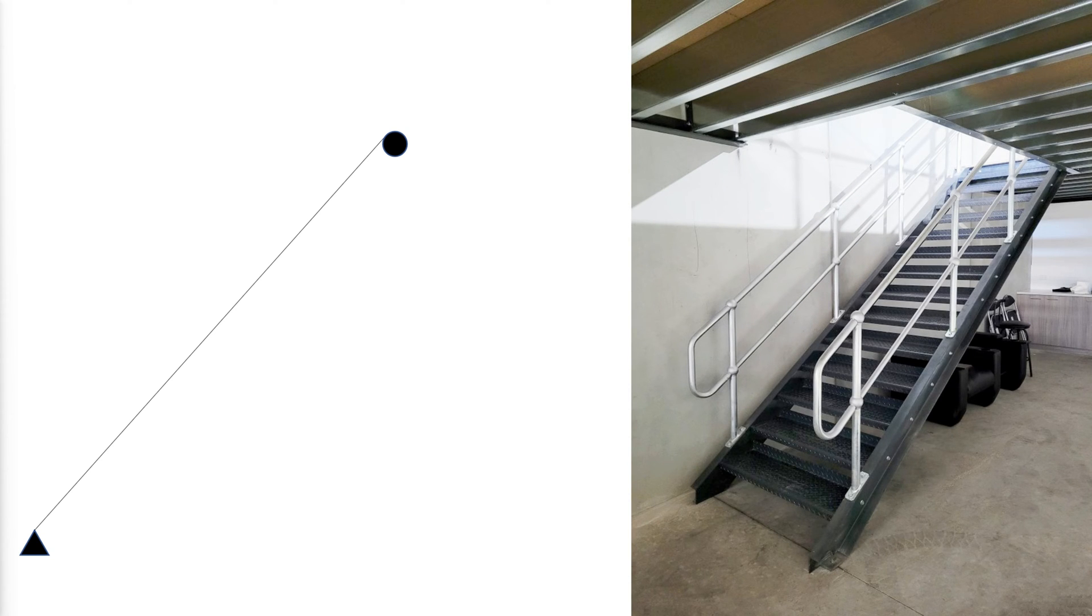Up until now, the assumption was that the stringer acts like a simply supported beam, which is acceptable when the staircase flight consists of a single inclined span with bolted connections at both ends as shown.